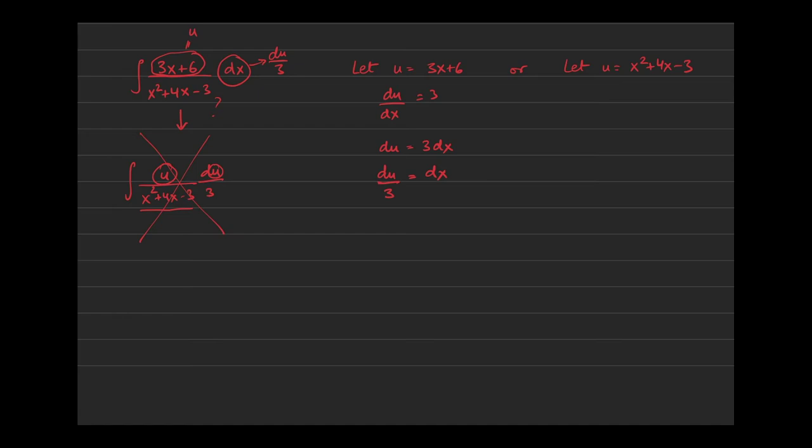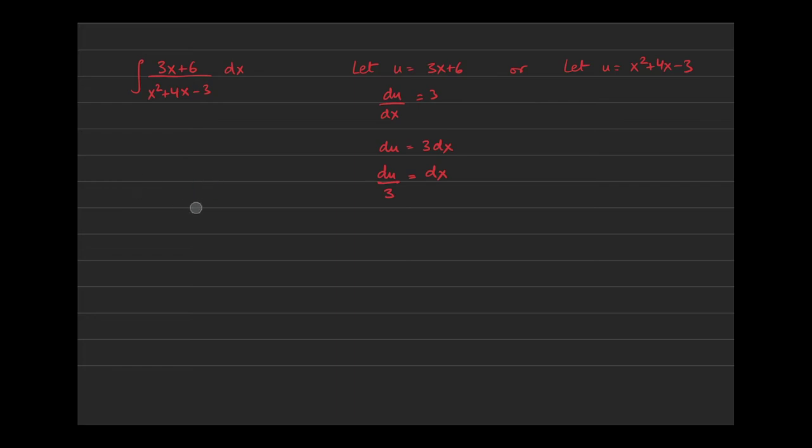So this is where, I guess, the art of picking the right u comes in as well. You want to pick something, the derivative of which is in the problem itself. Either exactly the same, or maybe you're off by a constant. So before I even did all this, I would have asked myself, if I let u equal to 3x plus 6, fine. The derivative would be 3dx.